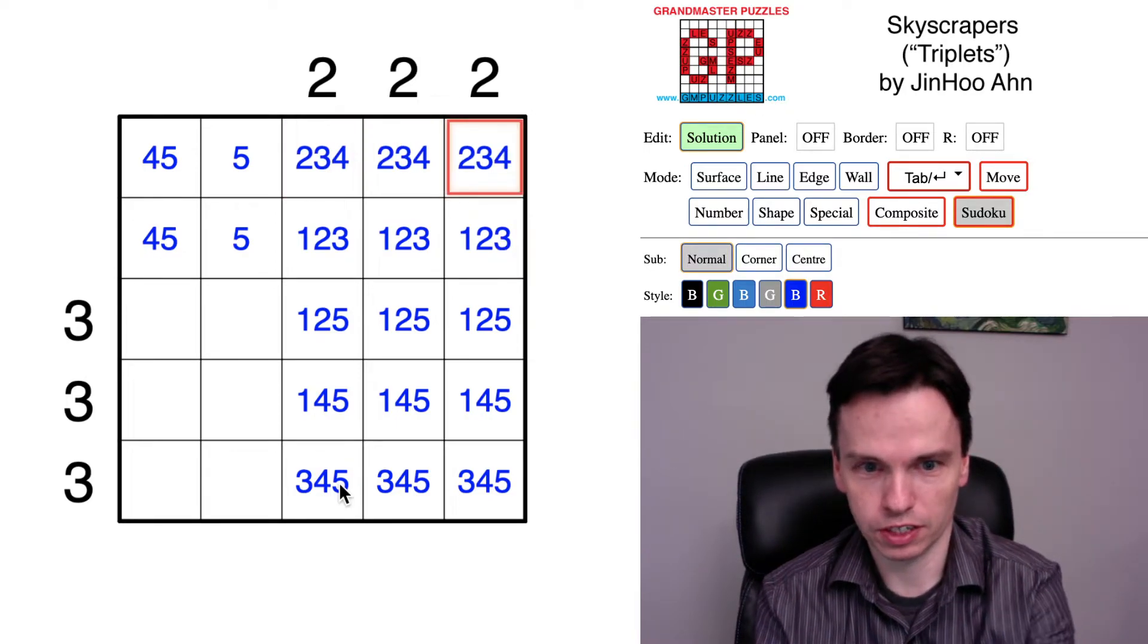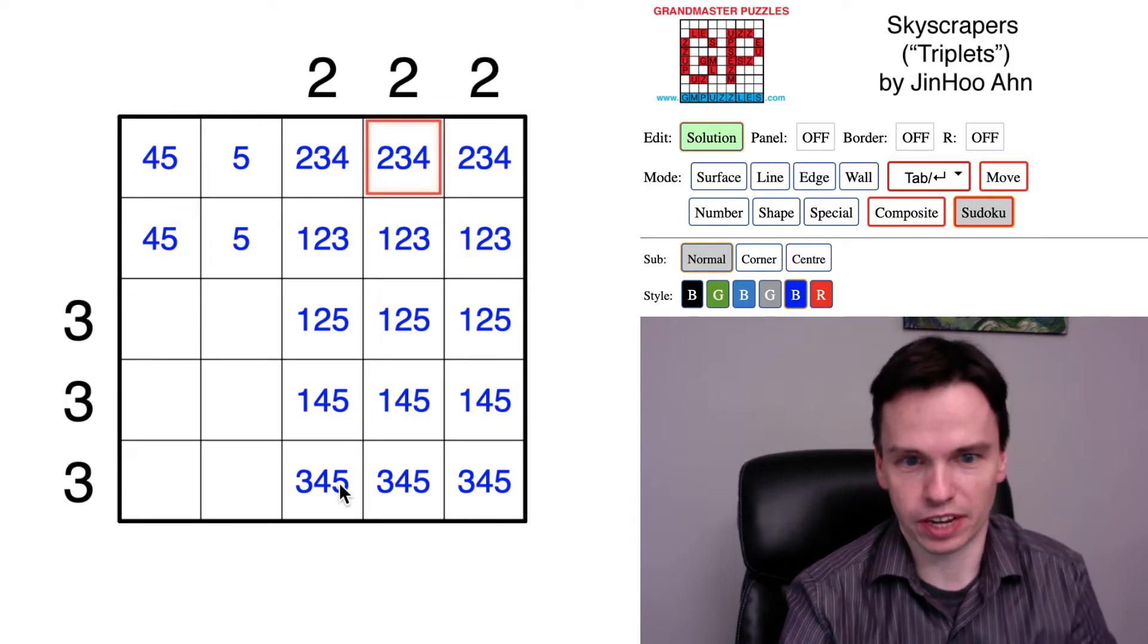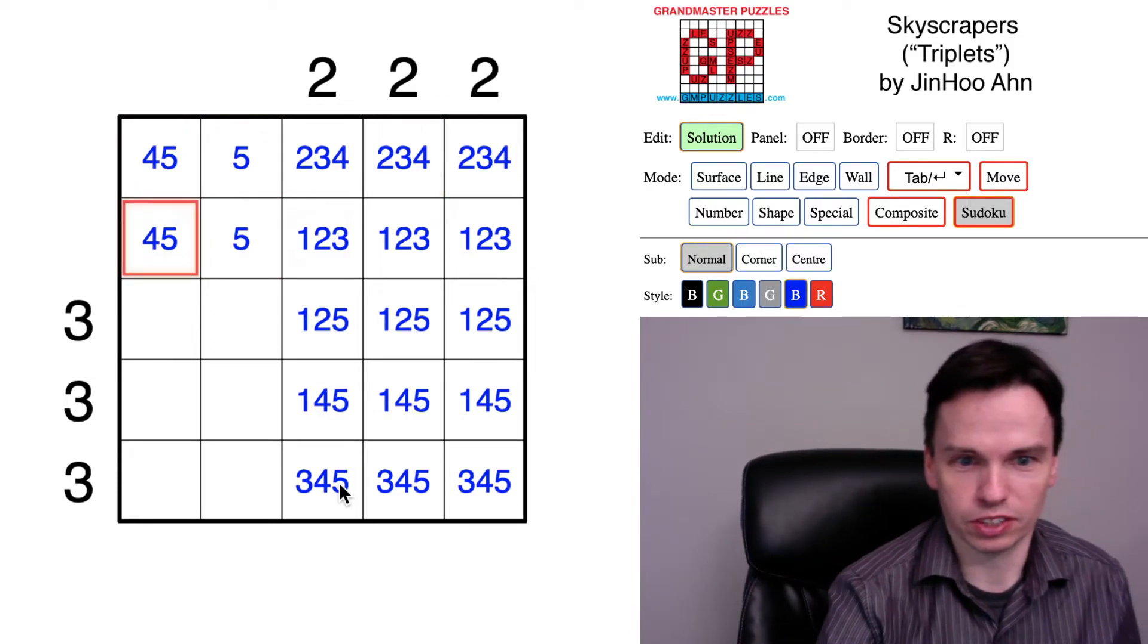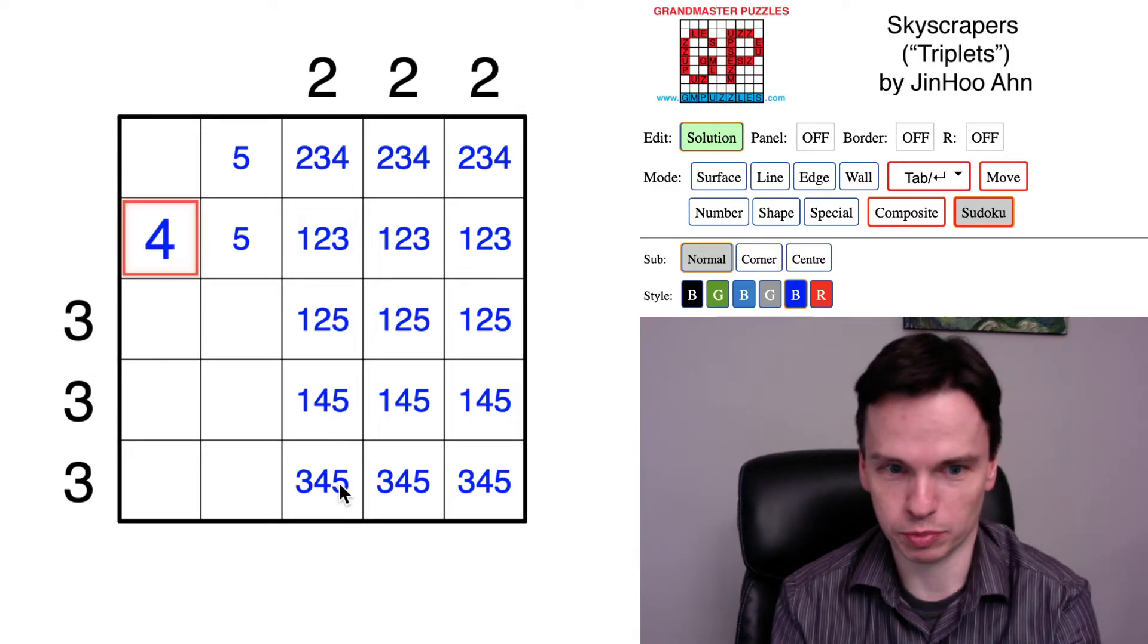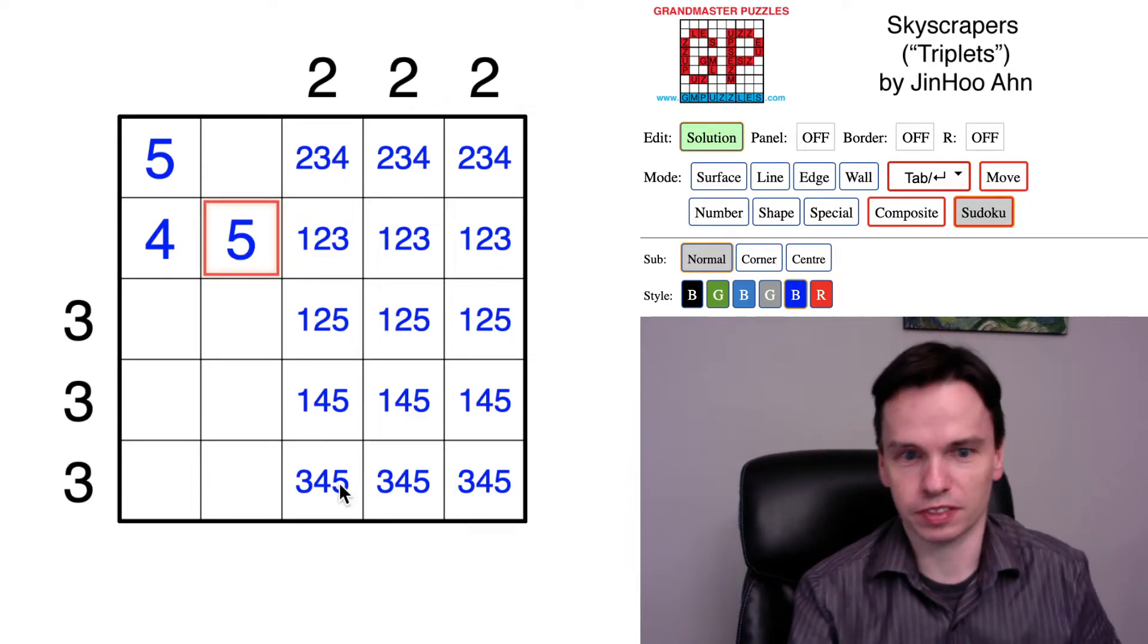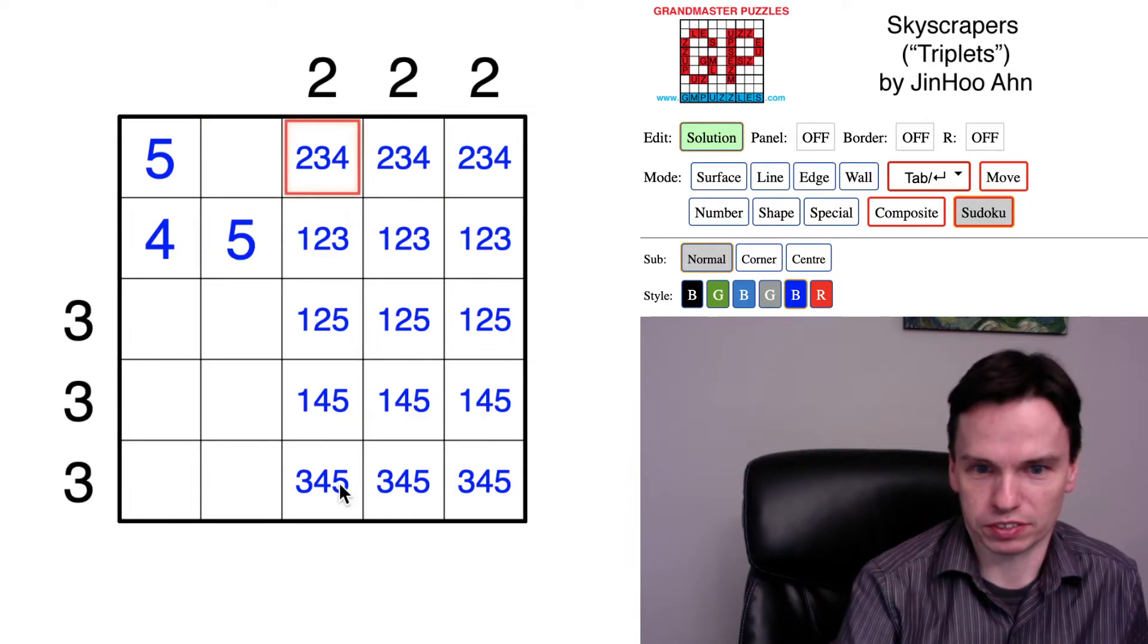And one deduction that solvers may have run into sooner is actually once they recognize a four is in front of one of these cells, you'll get that. On the left side, the four must be in this row and the five up above. And that gets you this five.